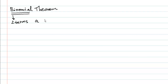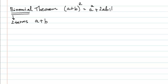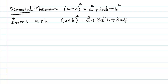The two terms, let's say A and B, are either added or subtracted. The binomial theorem is basically the expansion formula. For example, A plus B the whole squared equals A squared plus 2AB plus B squared. Similarly, A plus B the whole cubed equals A cubed plus 3A squared B plus 3AB squared plus B cubed.